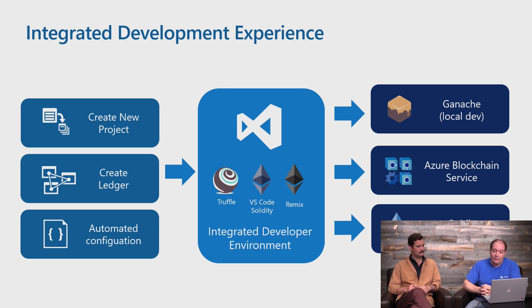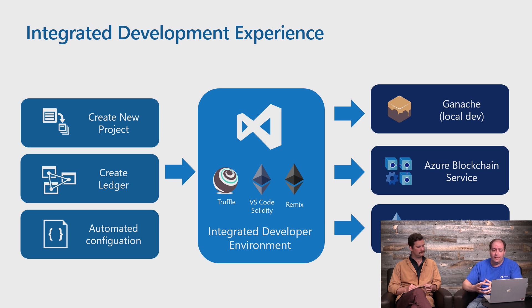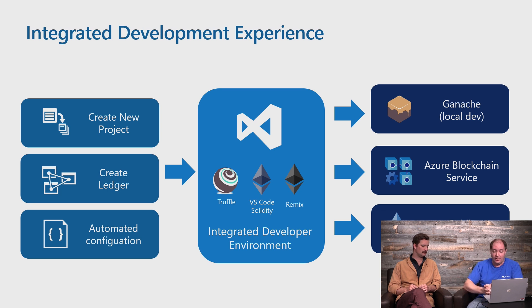With these new tools, you're able to create and compile smart contracts in Visual Studio Code using open source tools like Truffle and the Solidity extension. Then deploy the smart contracts to either public Ethereum, a consortium network in Azure Blockchain Service, or locally using a tool like Ganache. We think we have a good thing here, and it's also a tool that allows for extension — as other services come along, we have an environment that makes it very easy to bring those things together.